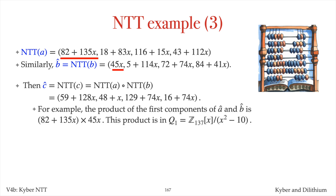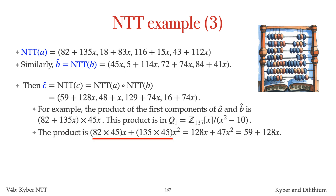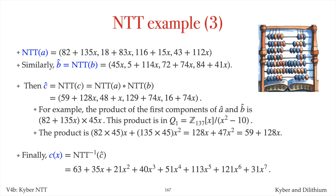For example, the product of the first components is (82 plus 135x) times 45x. This product is performed in the quadratic ring q1, which is Z137[x] modulo x squared minus zeta, where zeta equals 10. The product is 82 times 45 times x plus 135 times 45 times x squared. Now, 82 times 45 modulo 137 is 128, and 135 times 45 modulo 137 is 47. Finally, we replace x squared by 10 to get 59 plus 128x. The inverse NTT of ĉ is the degree-7 polynomial, which is the product of a and b modulo x to the 8 plus 1.